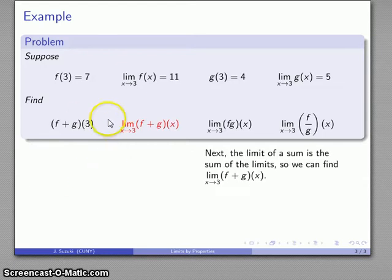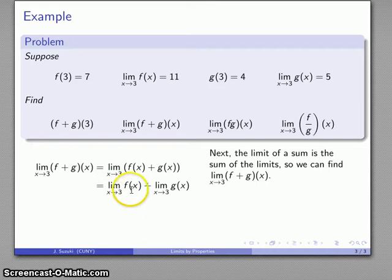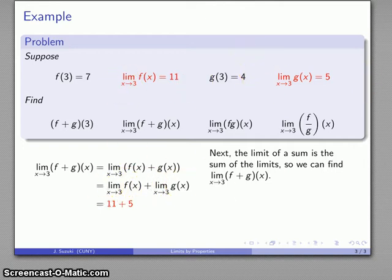Now let's take a look at the limit of f plus g of x. This is the limit of a sum of two functions, so the limit of a sum is the sum of the limits. It's the limit as x approaches 3 of f of x, plus the limit as x approaches 3 of g of x. I know those two values — this limit is 11, this limit is 5 — so 11 plus 5 equals 16.